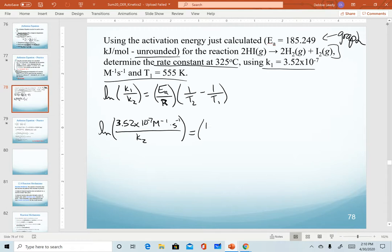Now my activation energy notice is in kilojoules. So I'm going to go ahead and convert that back to joules per mole. So that when I divide by my R constant, that is also in joules, those units will cancel out.